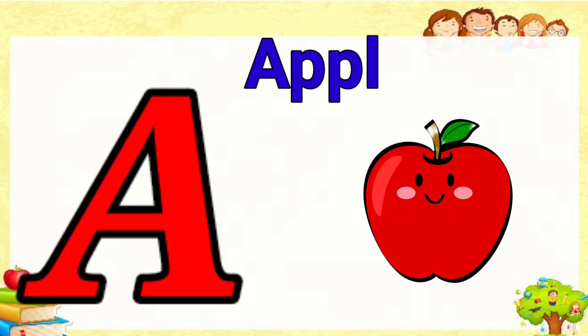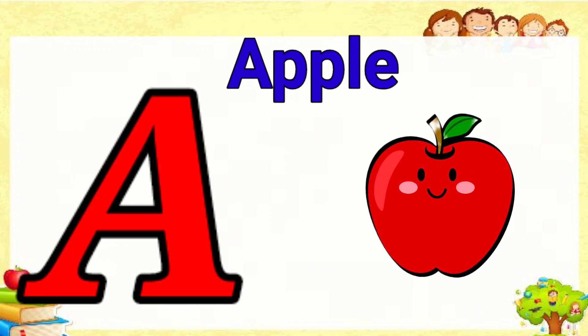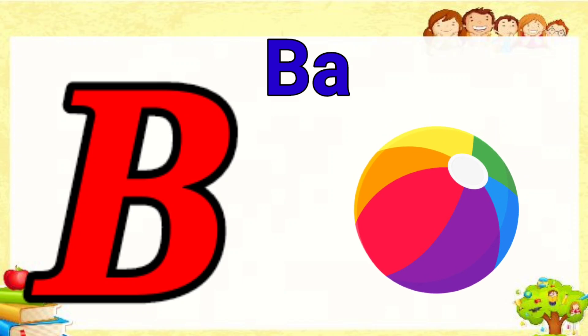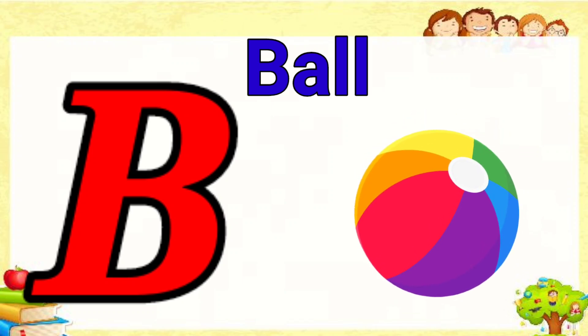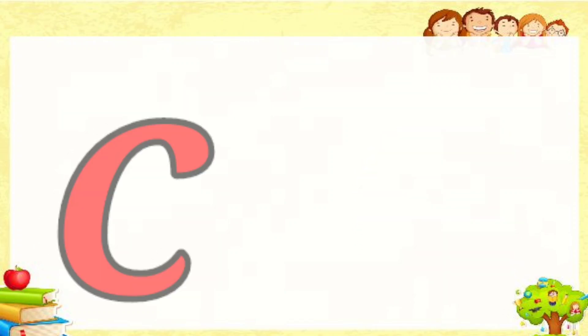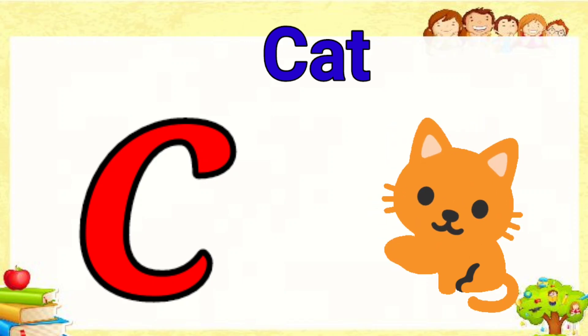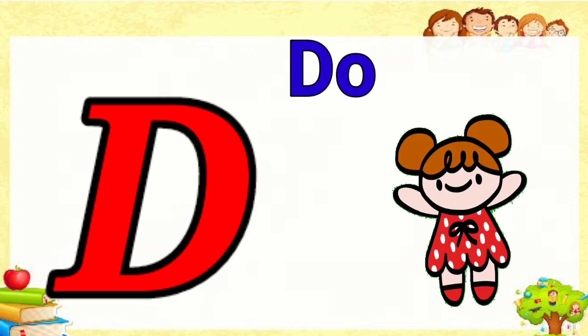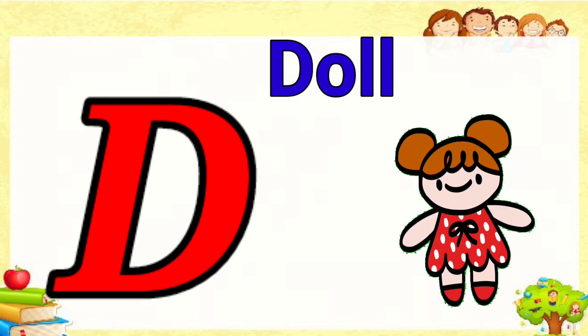A is for apple, a-a-apple. B is for ball, b-b-ball. C is for cat, c-c-cat. D is for doll, d-d-doll.